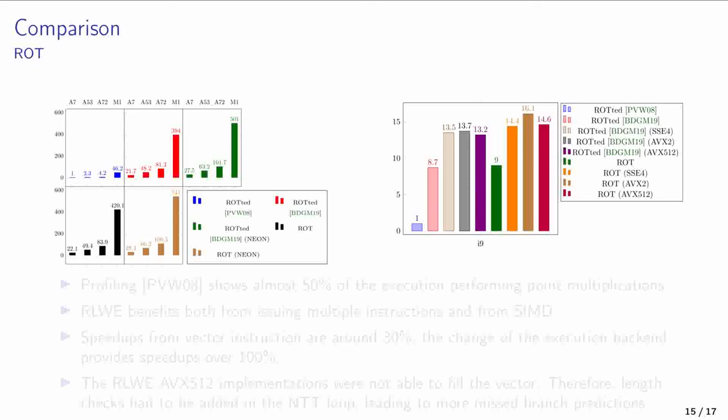We now provide the relative comparison between our random oblivious transfer proposal and the state-of-the-art for all architectures. On the left, one may see the results for the four ARM application class processors and on the right, the results for the Intel server class processor. In order to perform this relative comparison, we used PVW as the baseline. Again, we can see that our proposal improved substantially on the current state-of-the-art in all of the examples.